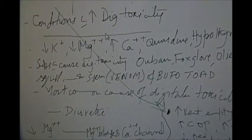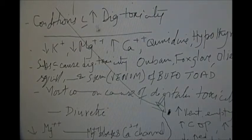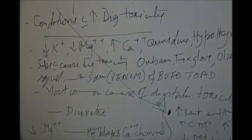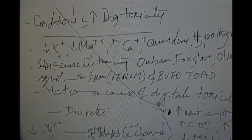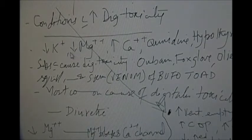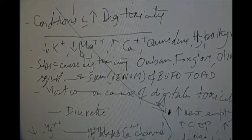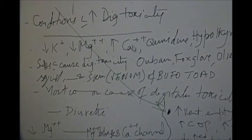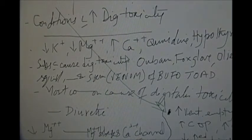What are the conditions that increase digitalis toxicity? Hypokalemia and hypomagnesemia increase the digitalis toxicity. Compared to this, hypercalcemia also increases the digitalis toxicity.